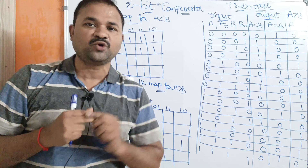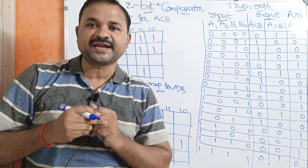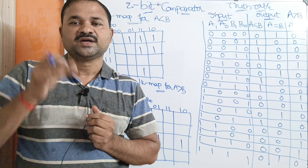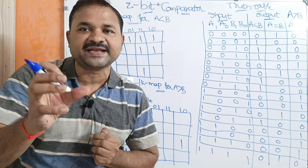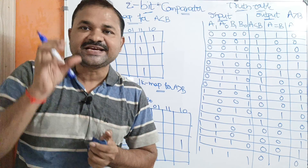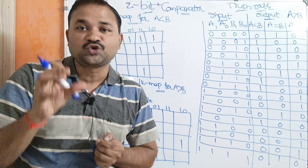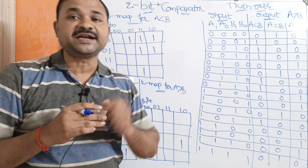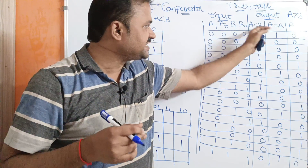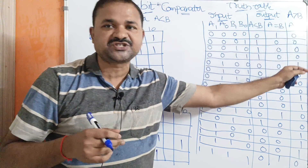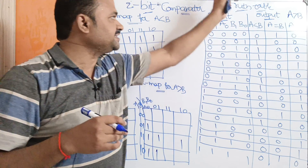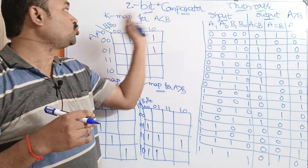Let us discuss the 2-bit comparator. A comparator is a combinational circuit which compares two binary numbers. Here, 2-bit means the size of each binary number is 2 bits. A comparator mainly produces three outputs: the first one is less than, the second one is equal to, and the third one is greater than. Now let us see the truth table for the 2-bit comparator.